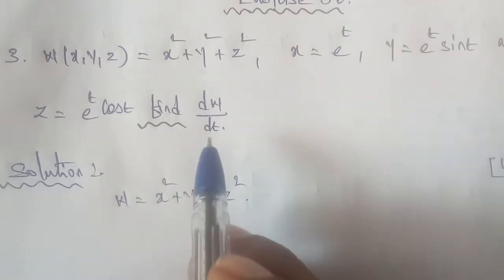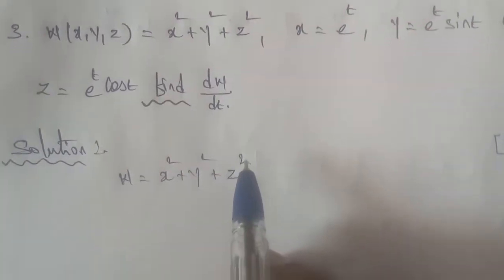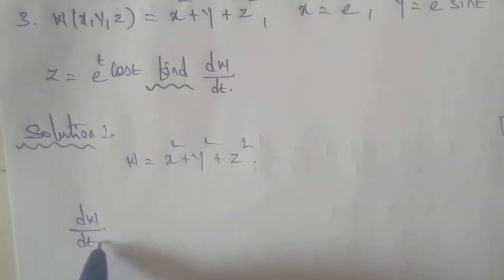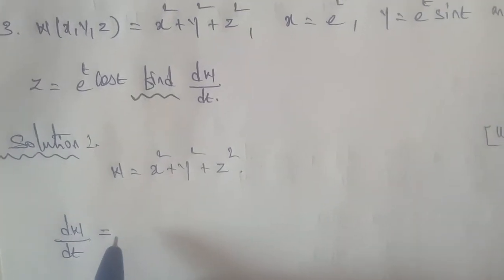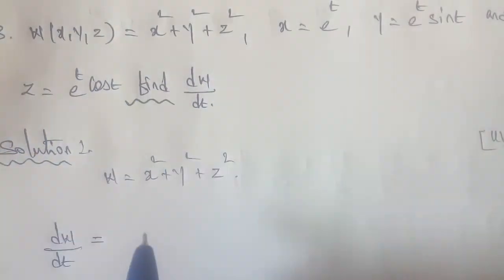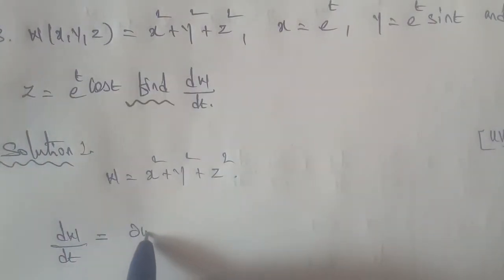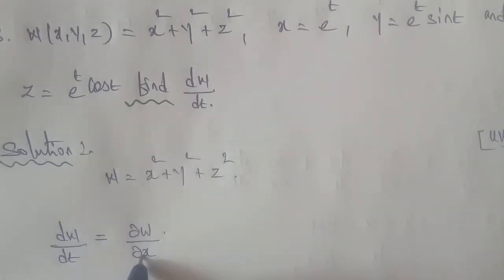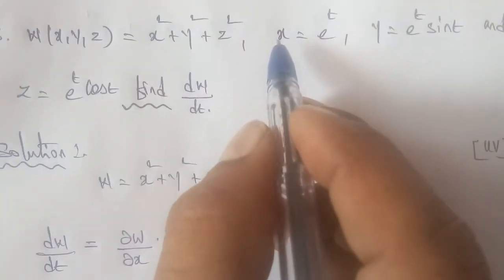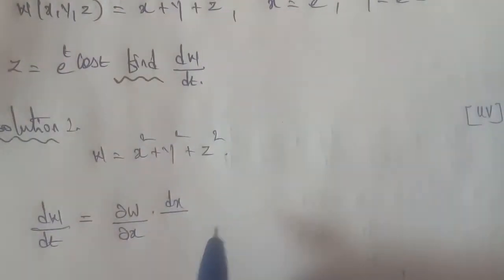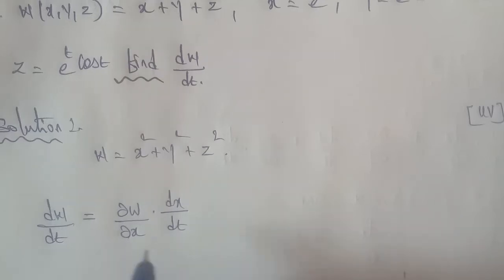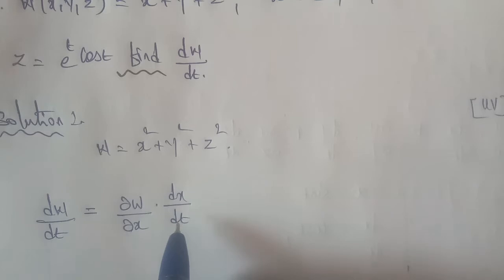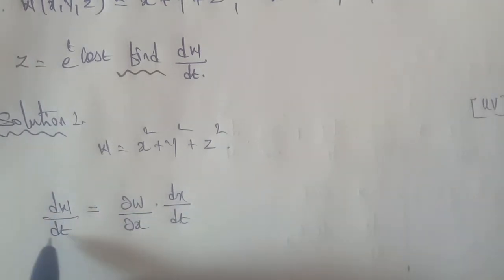First, let's look at the given question and find dw/dt. The format for the chain rule: dw/dt = (∂w/∂x)(dx/dt) + (∂w/∂y)(dy/dt) + (∂w/∂z)(dz/dt). We apply this same procedure as before.